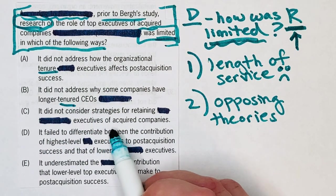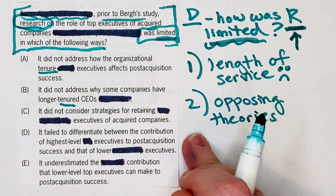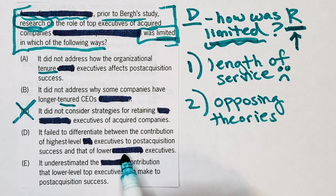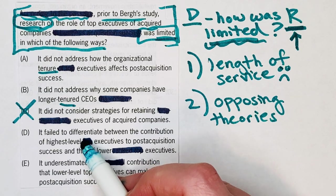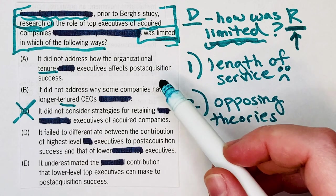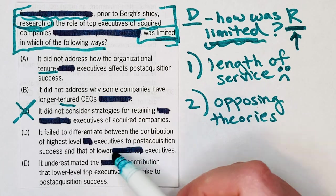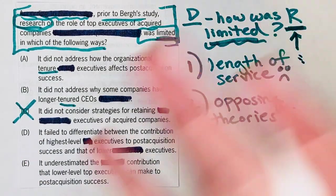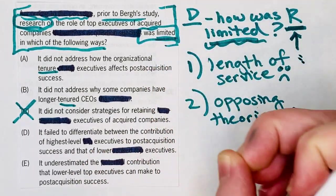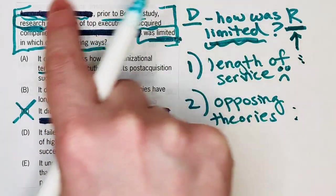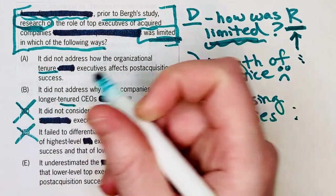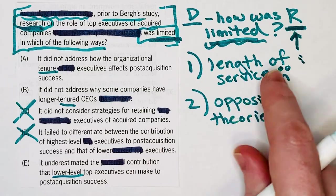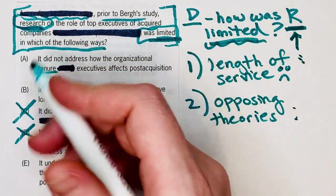C: it did not consider strategies for retaining executives of acquired companies. That's not one of the limitations — strategies for retaining was not one of the criticisms at all. D: it failed to differentiate between the contribution of highest level executives and that of lower executives. Similar to the problem with B, we're not making a comparison between highest-level and lower executives — that's not one of our limitations. E: it underestimated the contribution that lower-level top executives can make to post-acquisition success. Again, it wasn't talking specifically about lower level versus upper level — that idea of a comparison is wrong.